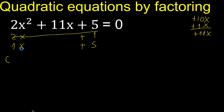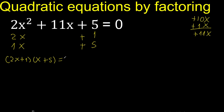Therefore, like this: 1 multiplied by x is x, plus 5 equal 0. Multiplication equals 0, therefore this equals 0, or this equals 0.